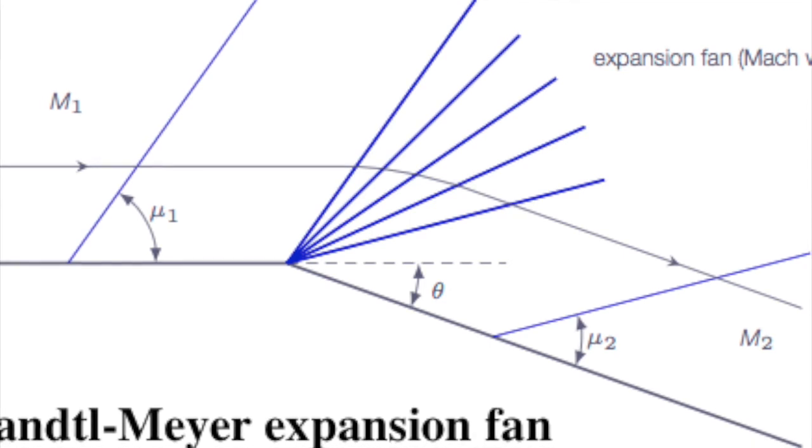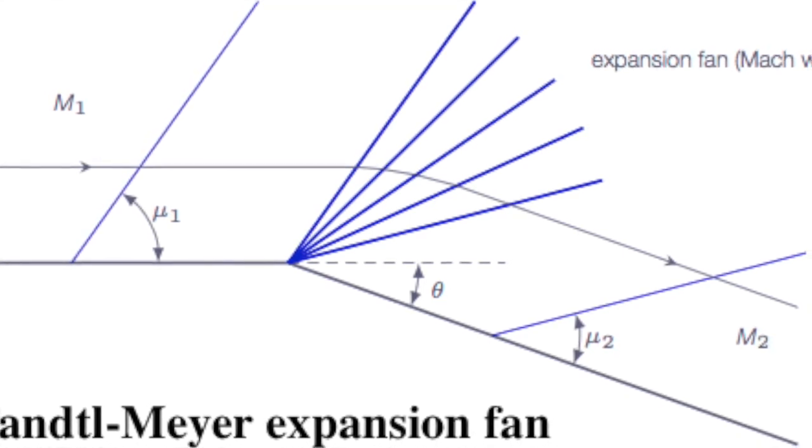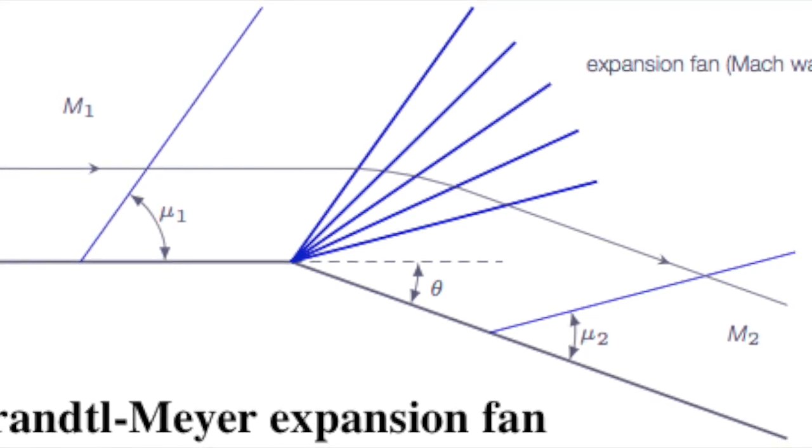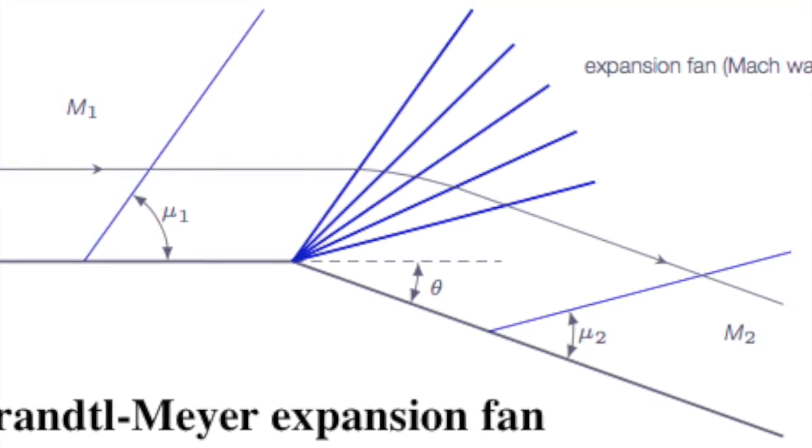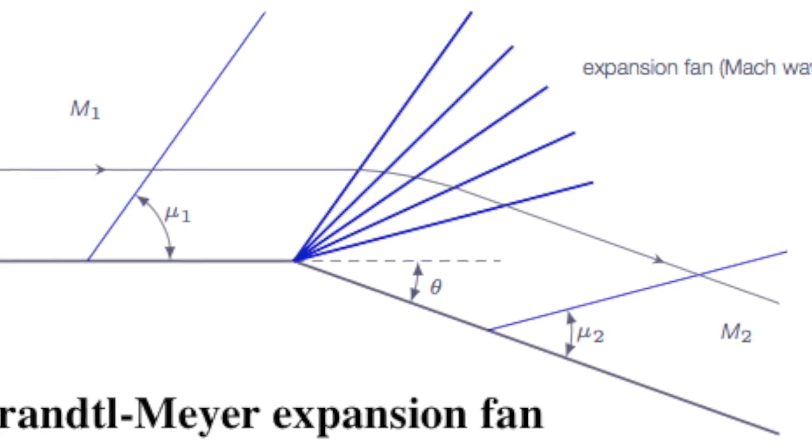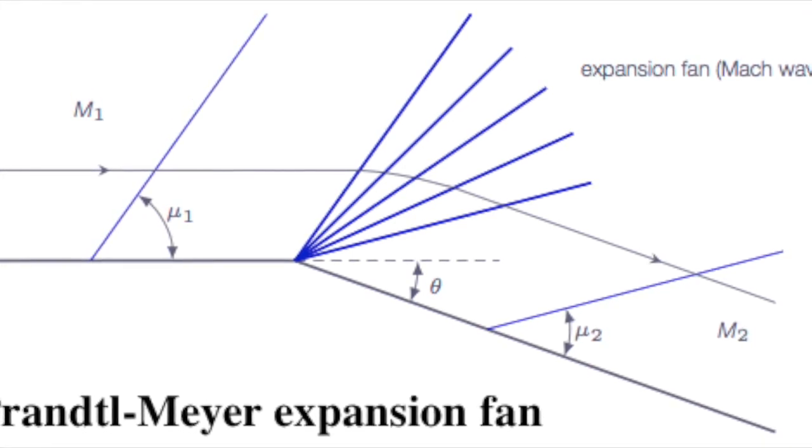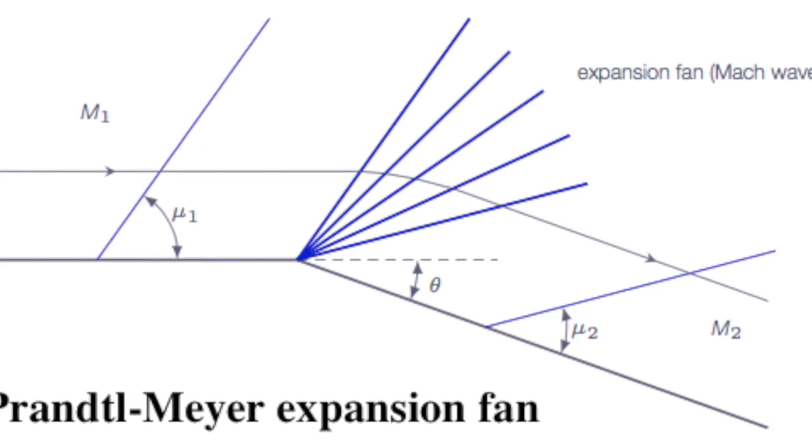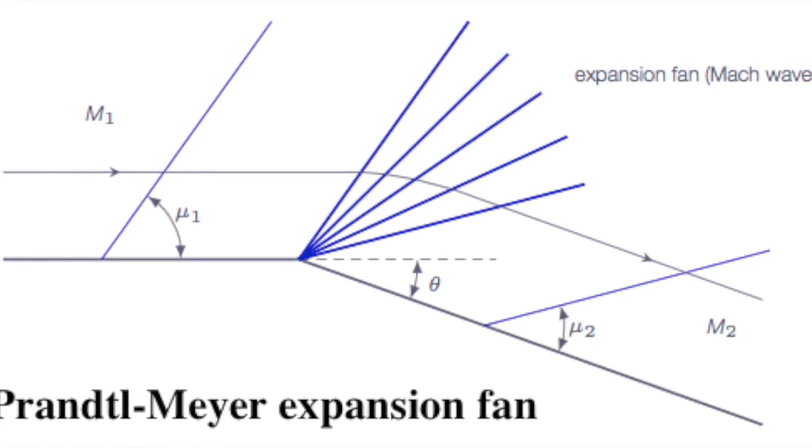To appreciate this more fully, some qualities aspects of flow through an expansion wave are: M2 is always greater than M1 and expansion corner is a means to increase the flow Mach number. Streamlines through an expansion wave are smooth curved lines.